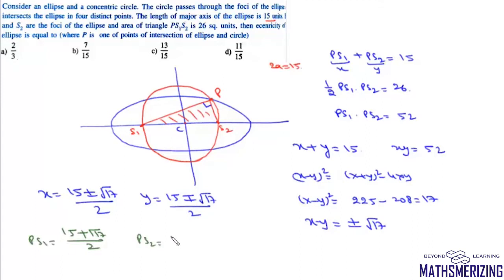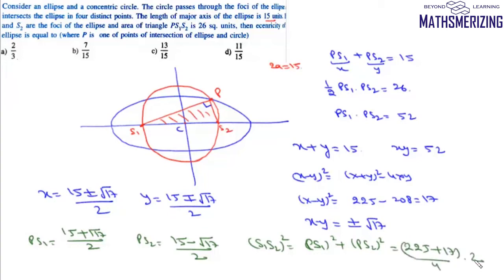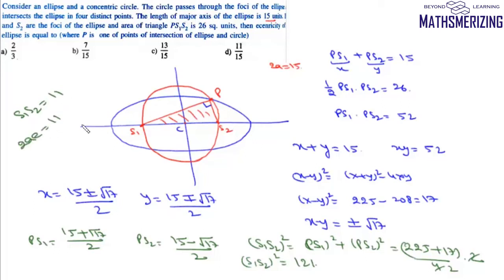The focal radii are PS1 = (15 + √17)/2 and PS2 = (15 - √17)/2. Using the right triangle: S1S2² = PS1² + PS2² = [(225 + 17)/4]·2 = 242/2 = 121, so S1S2 = 11. Since S1S2 = 2ae = 11 and 2a = 15, the eccentricity e = 11/15 — option D.